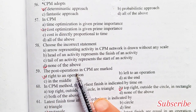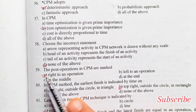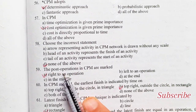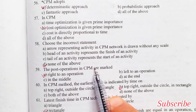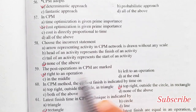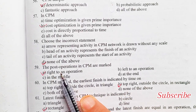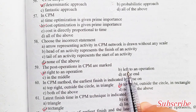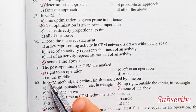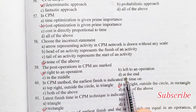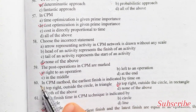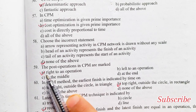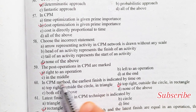The post operations in CPM are marked: right to an operation, left to an operation, in the middle, or at the end. Option A is the right answer — right to an operation.